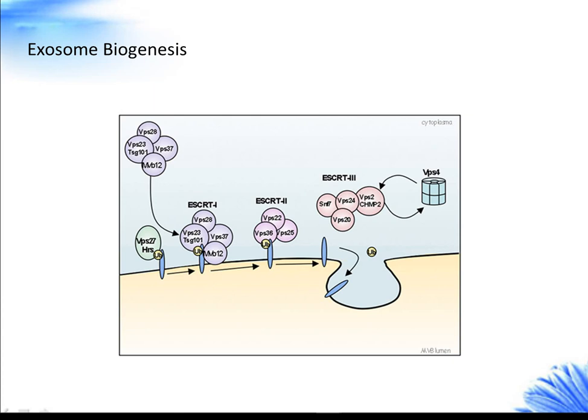The ESCRT complex is usually recruited to the cytosolic side of the endosomal membrane for the sorting of selected proteins to intraluminal vesicles (ILVs), which requires ubiquitination of the cytosolic tail of endocytosed receptors. The ESCRT-0 complex recognizes and sequesters